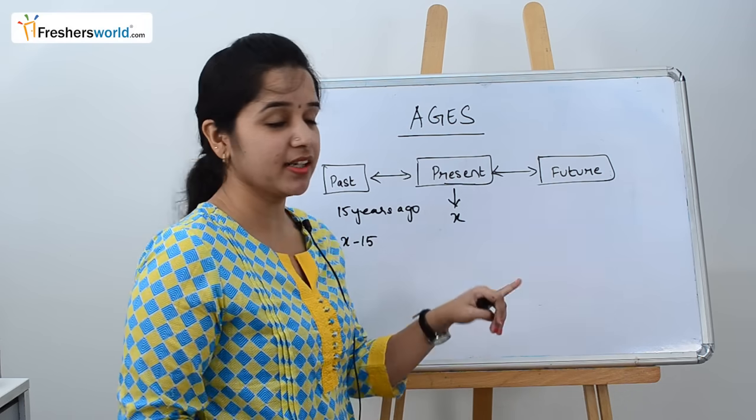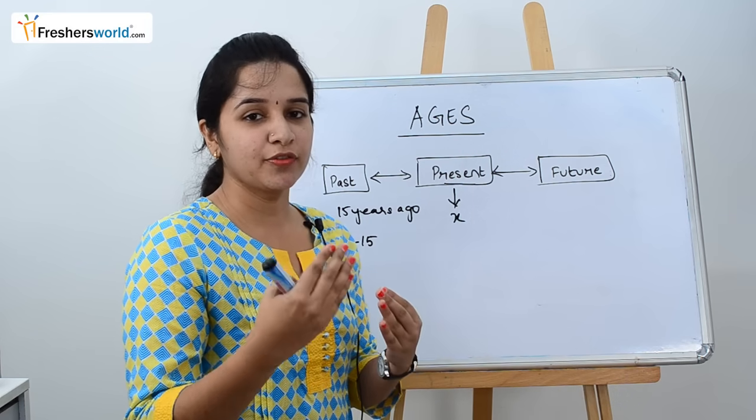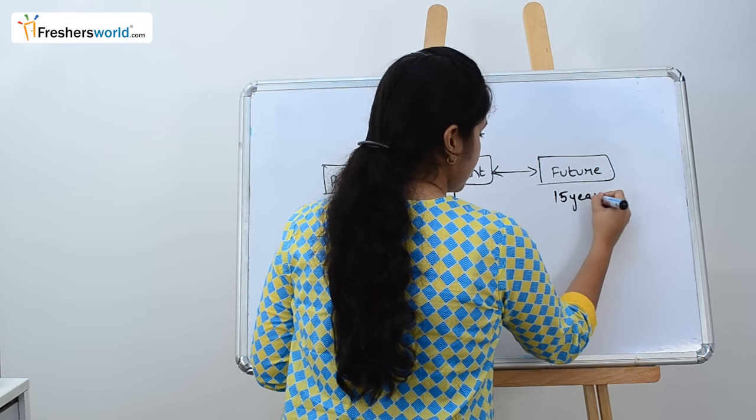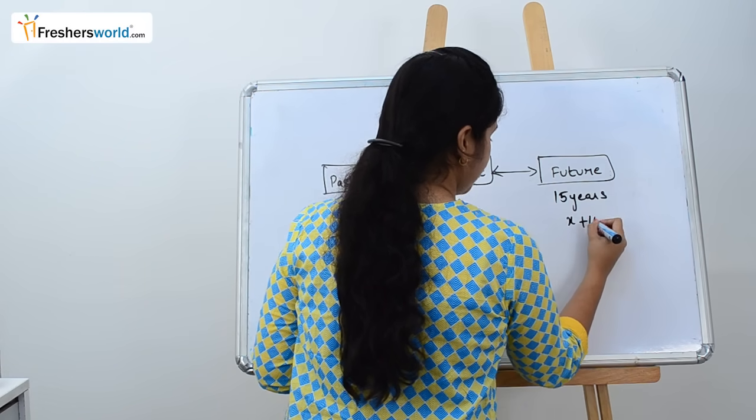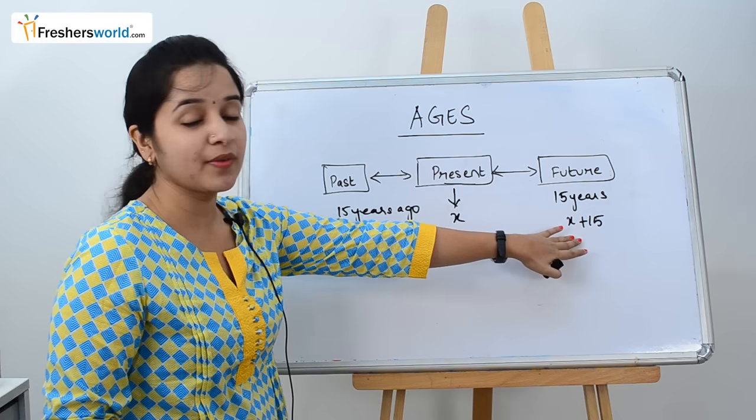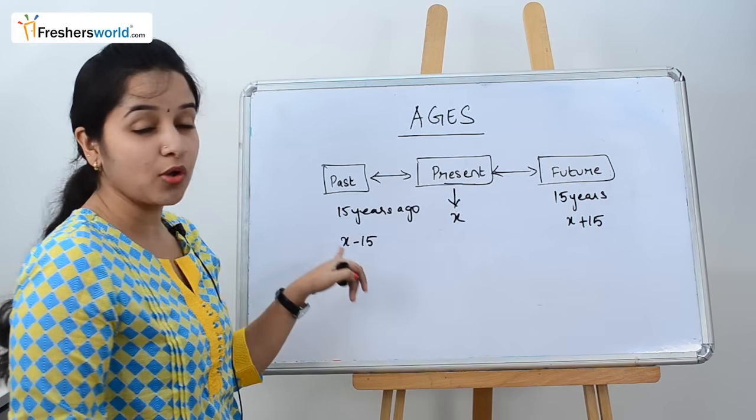Similarly, they will tell 15 years hence or 15 years after, so you take it as X plus 15. For past and future, future you will always add and for past you will always subtract it.